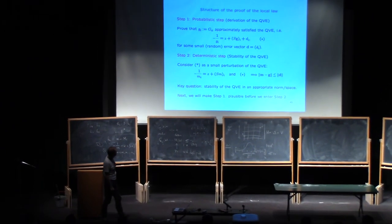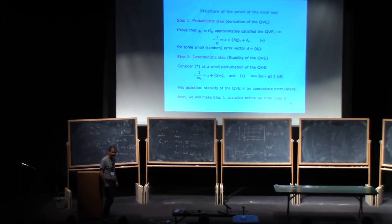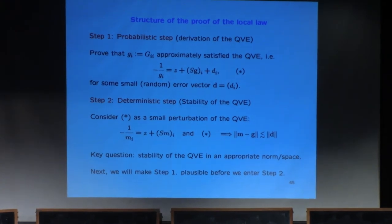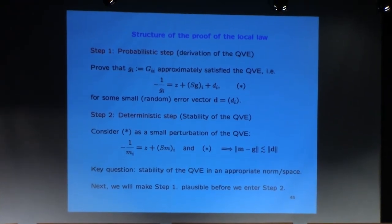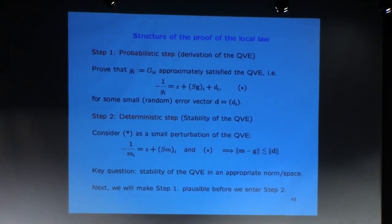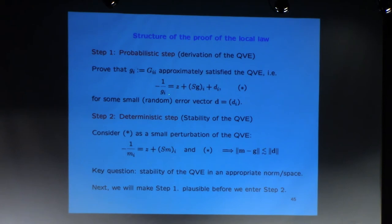The structure of the proof of the local law always has two steps. The first is the probabilistic step, also called the derivation of the QVE: you argue that the diagonal elements of the resolvent approximately satisfy the QVE. You can write an equation for G_{ii} where the main part is exactly the QVE plus some error vector D, and this error vector turns out to be small.